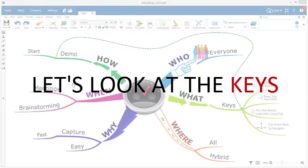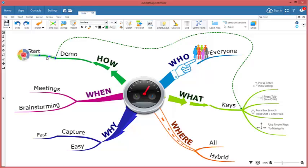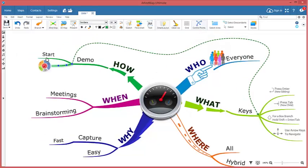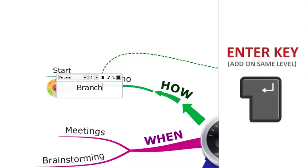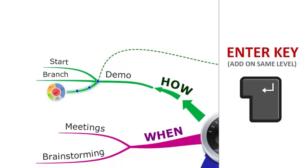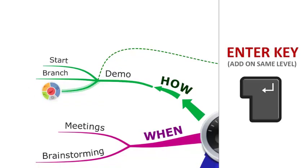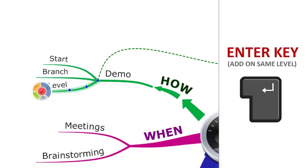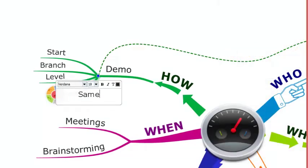iMyMap allows you to quickly capture your ideas and create branches through the use of speed keys. Use the Enter key to add new branches on the same level as your selected branch. After inserting your new branch, simply start typing your text and hit Enter.